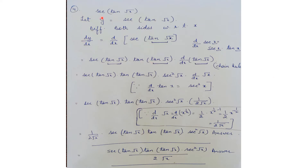Moving to question 4: sec(tan(√x)). Let y = sec(tan(√x)). Differentiating both sides with respect to x, we get dy/dx = d/dx[sec(tan(√x))]. We know the formula d/dx(sec x) = sec x · tan x. So wherever x appears in the formula, we substitute it with tan(√x).